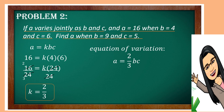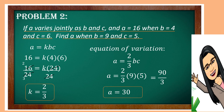Now we can find A when B equals 9 and C equals 5. By substitution, A is equal to 2 thirds times 9 times 5. 2 times 9 is 18, times 5 is 90, over 3, simplified into 30. So the value of A is 30.